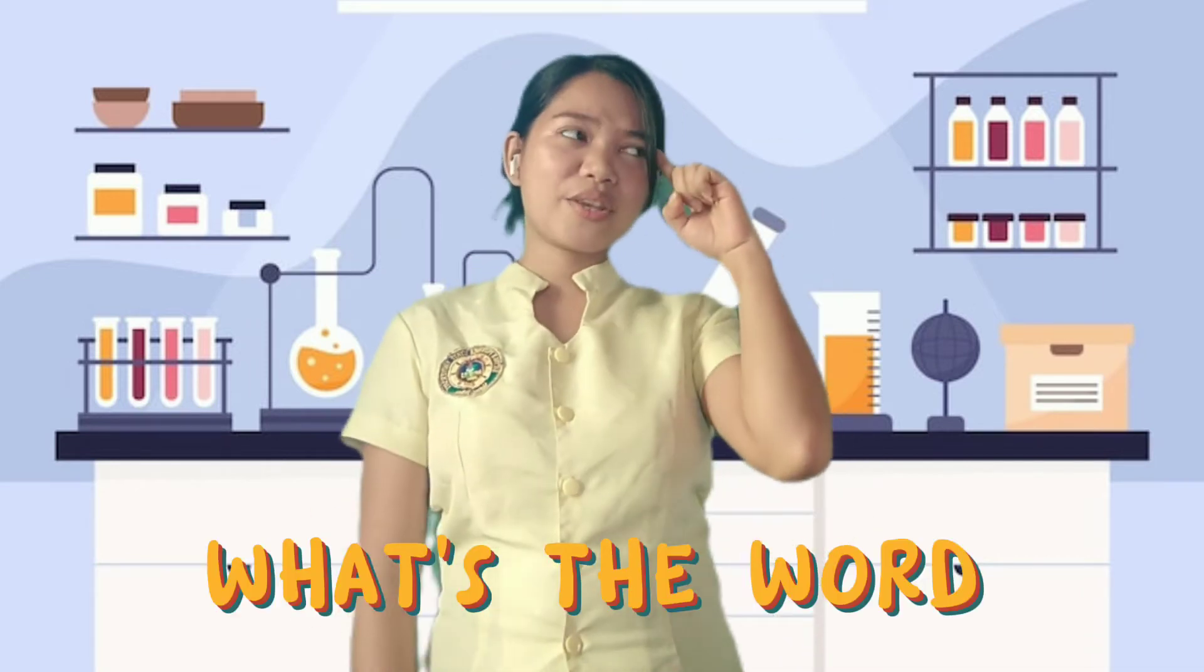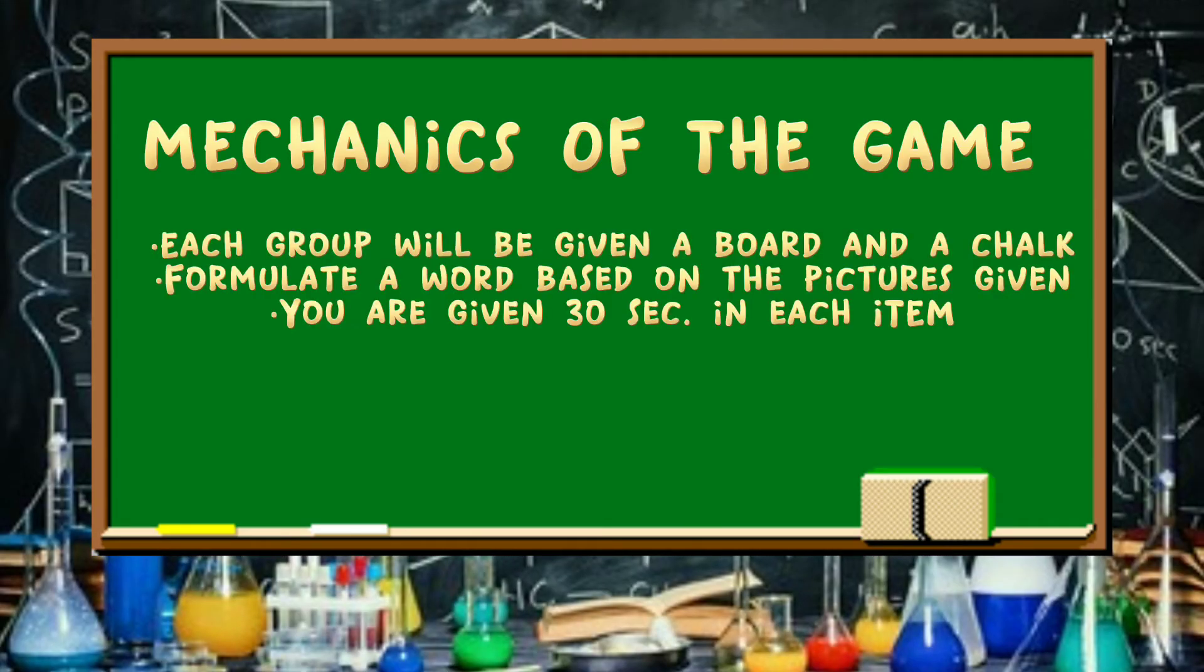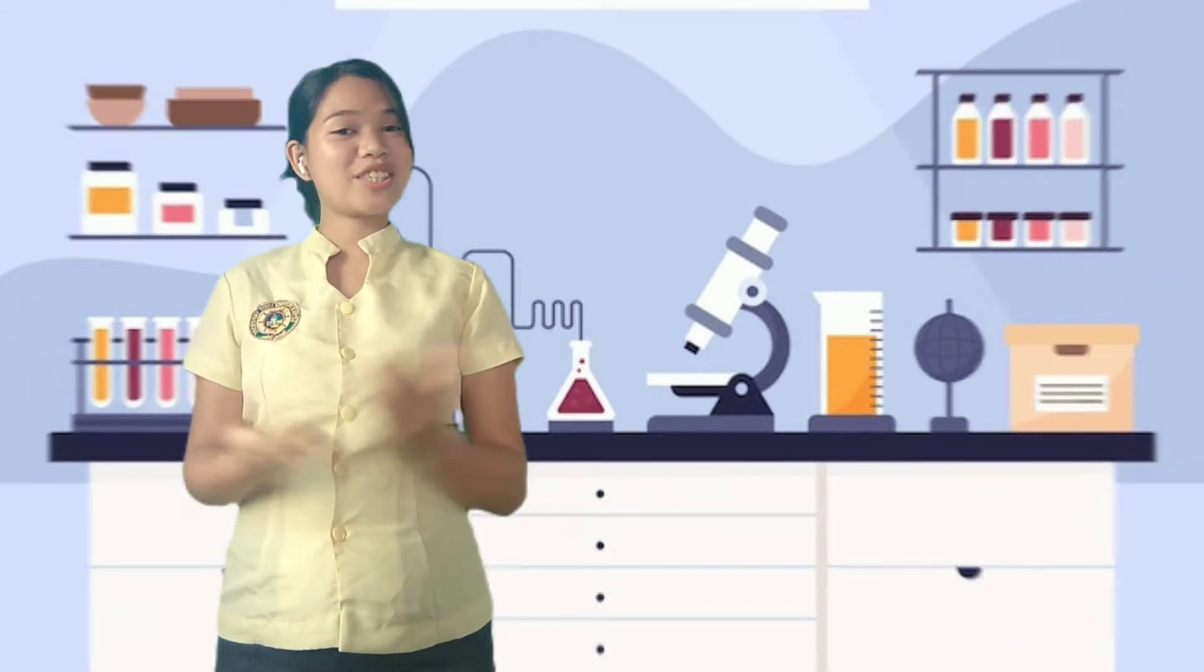Let us have a game. The title of this game is What's the Word? I want you all to group yourself into 5 groups. Mechanics of the Game: Each group will be given a board and a chalk. Formulate a word based on the pictures given. You are given 30 seconds in each item. The group who will get the correct answer will have 1 point. The group with the highest points will be the winner. Are you all ready to play? Let's start!